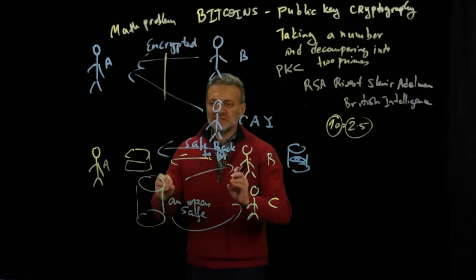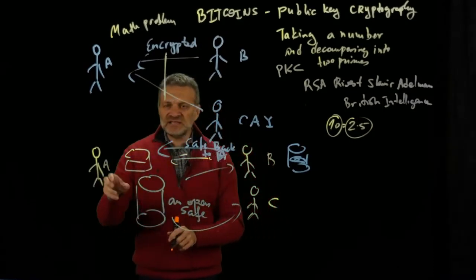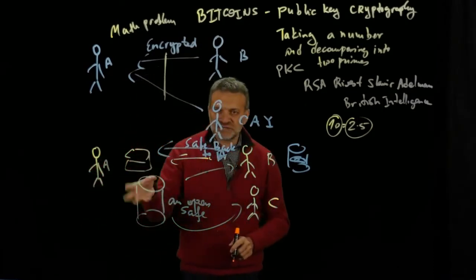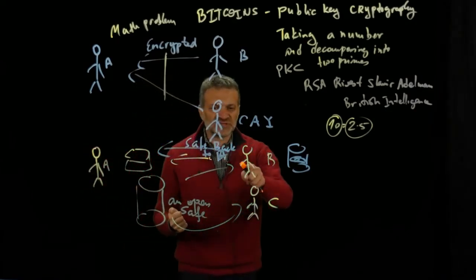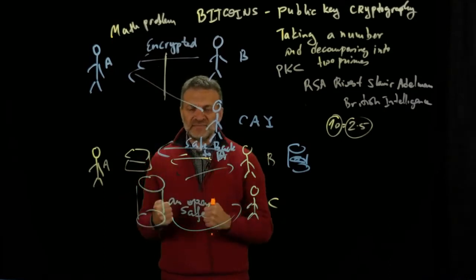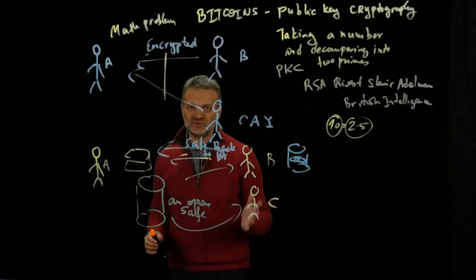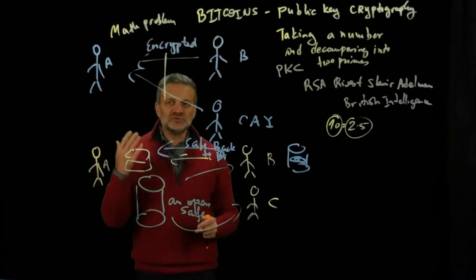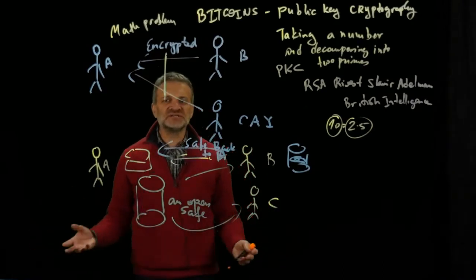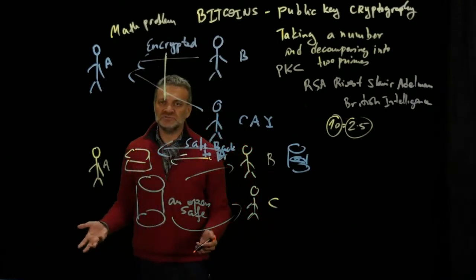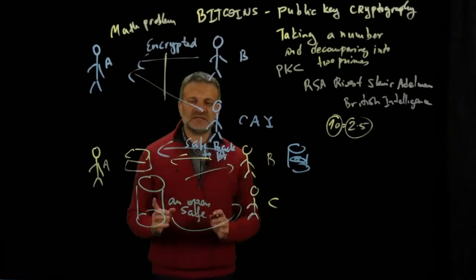This is similar to the safe analogy. If Alice knows the safe code, it's very easy for her to open the safe. But if someone intercepts the message, it will be very, very tough for them — because they don't know the safe code. They could spend 20 or 30 years trying to crack it. That's the essence of public key cryptography.